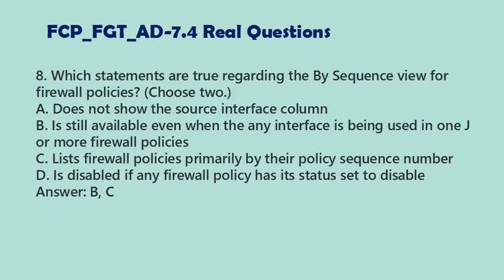Question 8: Which statements are true regarding the by-sequence view for firewall policies? Choose 2. A. Does not show the source interface column. B. Is still available even when the any interface is being used in one or more firewall policies. C. Lists firewall policies primarily by their policy sequence number. D. Is disabled if any firewall policy has its status set to disable. Answer: B and C.